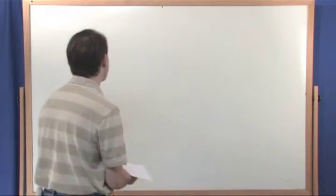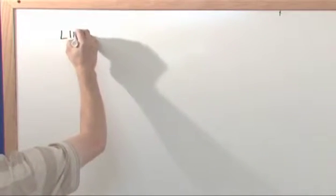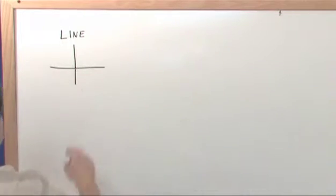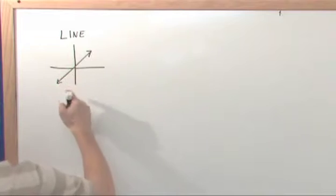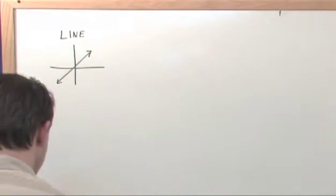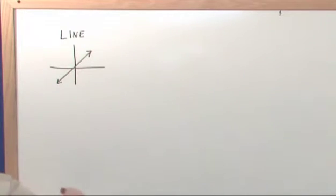Okay, here are some common graphs that you already know, but I'm just going to put them up here for reference to refresh your memory. The graph of a line just looks like this — it goes on side to side, forever in both directions.